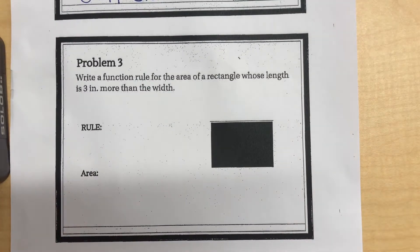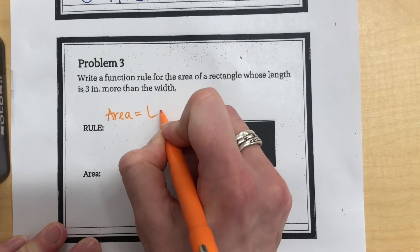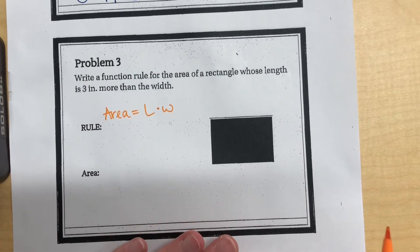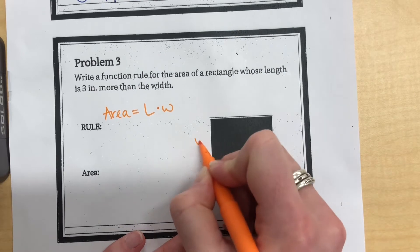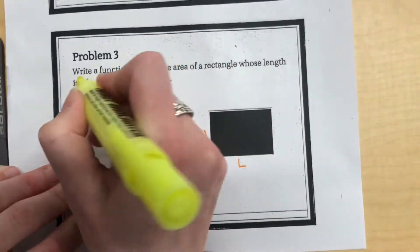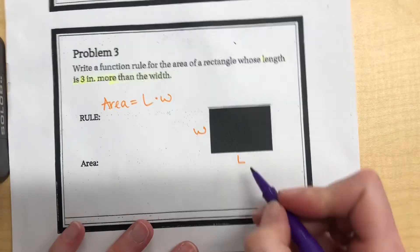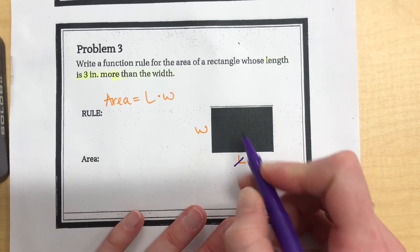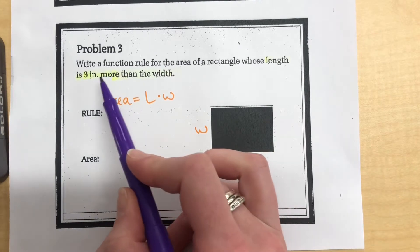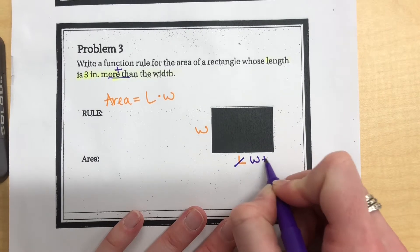Number 3: write a function rule for the area of a rectangle whose length is 3 inches more than its width. Keep in mind the area formula for a rectangle is length times width. We can use a picture to label the length and width. The important information says the length is 3 inches more than the width, so instead of using L, I'm going to replace it with the width plus 3.